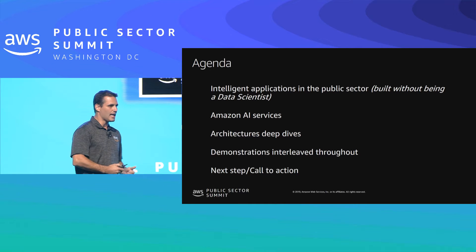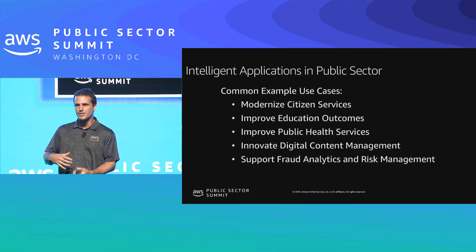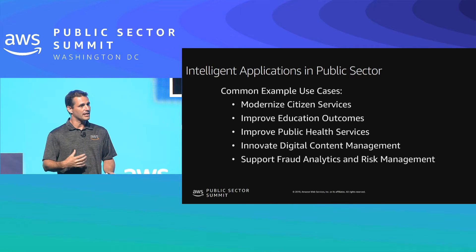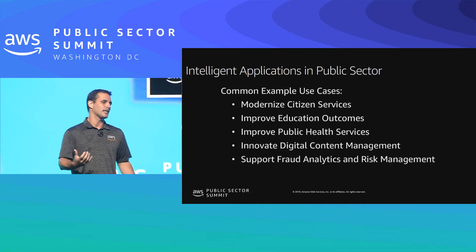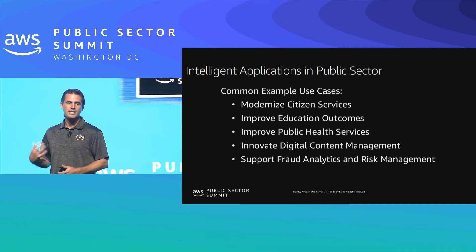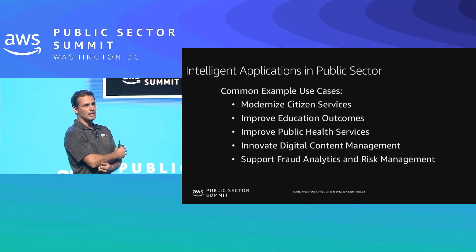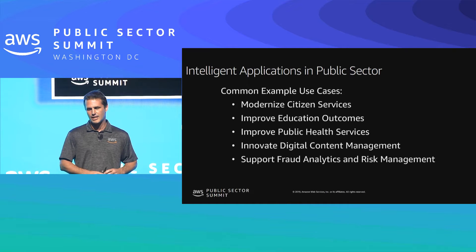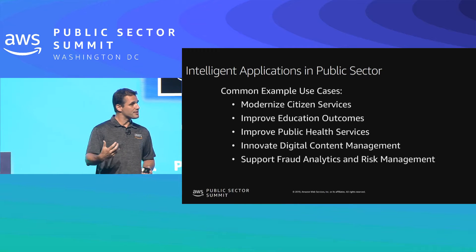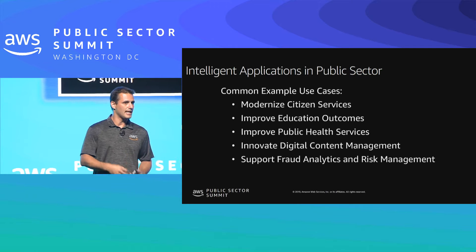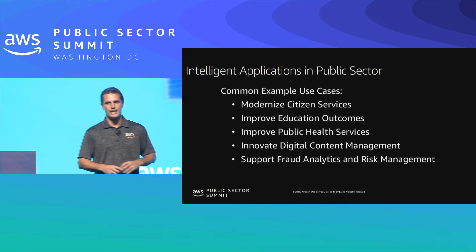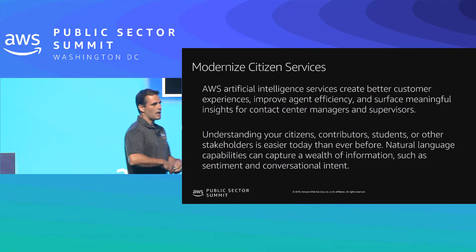What are some intelligent applications we're seeing within public sector? The first is modernizing citizen services. We're also working with educational institutes to add machine learning into their capabilities — we'll talk about a public case study with Echo 360. Additionally, we'll cover improving public health services, content management systems improved using AI and machine learning, and fraud analytics and risk management.